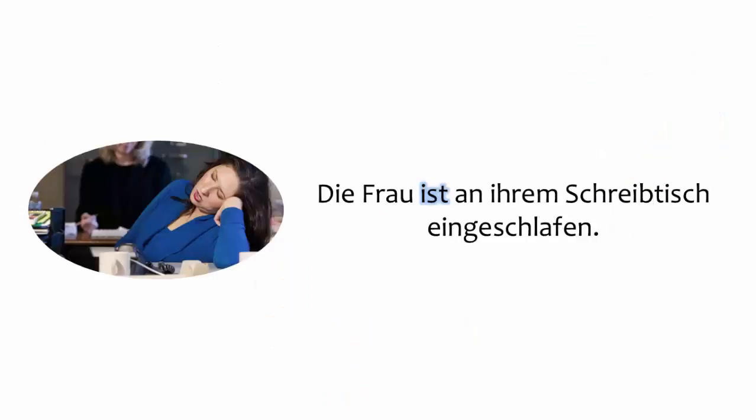To wrap up, let's look at common errors to avoid when selecting the helping verb. The first common error to avoid is the use of haben as the helping verb when sein is called for. Remember to use sein when indicating a change of state or a change of position. The verb einschlafen, for example, represents a change of state from wakefulness to sleep, and therefore requires sein as the helping verb.